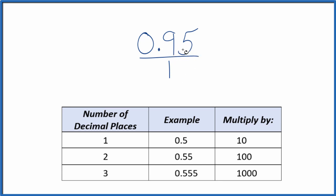We need to get 0.95 to a whole number, and we have two decimal places. So two decimal places, if we multiply by 100, that'll give us a whole number. 100 times 0.95 equals 95. So we have our whole number.